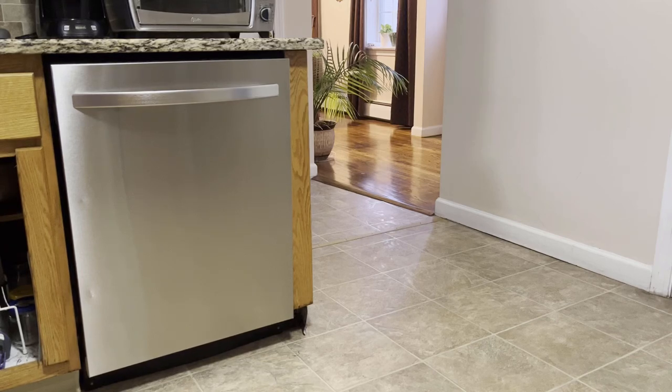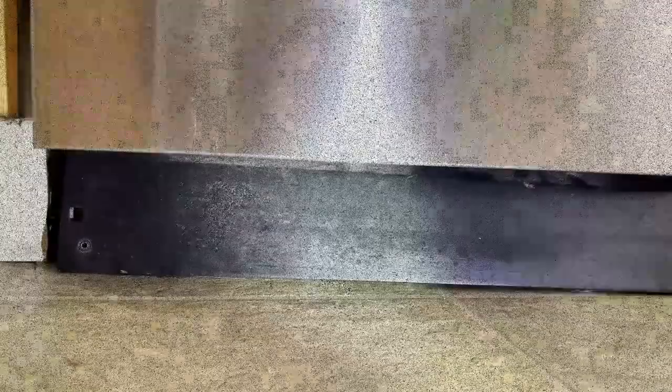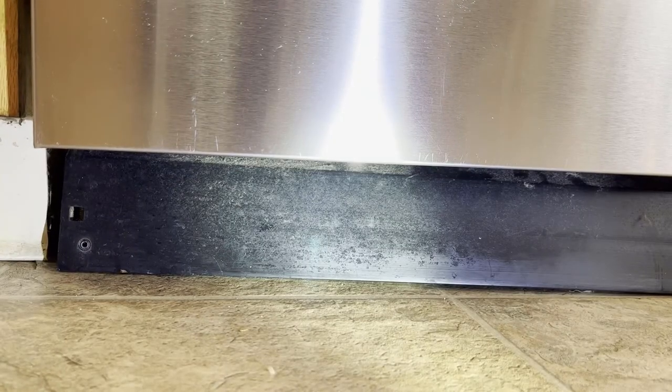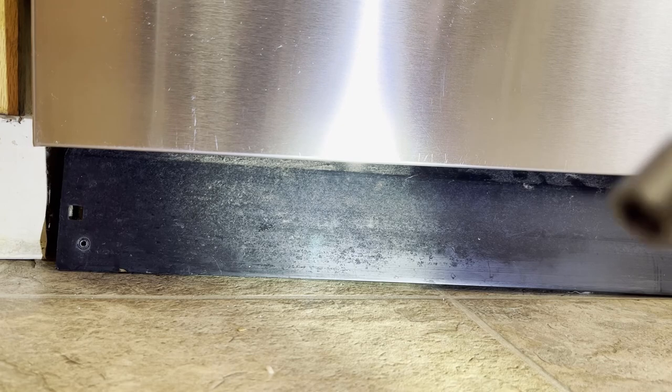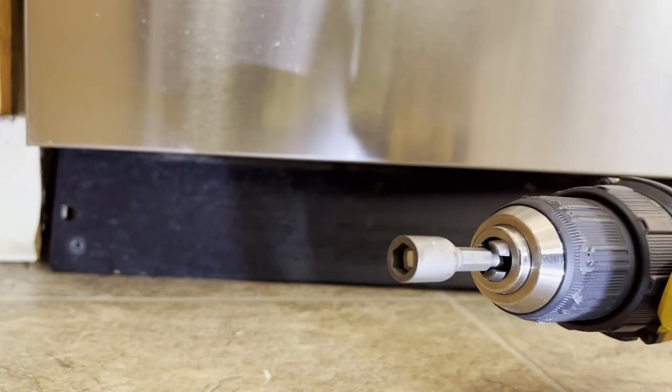In our basement, I noticed that there was a leak coming from the ceiling. A little investigation revealed that it was actually the dishwasher leaking from underneath. I'm going to show you how I fixed that. To check, I removed the bottom panel using a 5/16 hex bit.